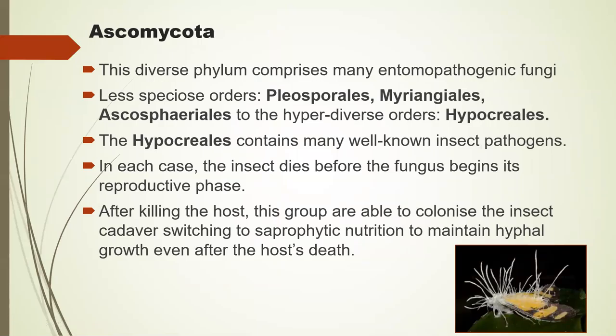Now we get to the Ascomycota — the really exciting ones, probably the Rolls Royce of the entomopathogenic fungi category. It's a diverse phylum comprising many entomopathogenic fungi. We have some less speciose orders like Pleosporales, Morangiales, and Ascosphaerales, and then the hyperdiverse Hypocreales, where most of you have heard of Cordyceps and Ophiocordyceps. These are the hemibiotrophs — the insect dies before the fungus begins to produce spores. After killing the host, they colonize the cadaver, switching to saprophytic nutrition, making a nice tight mummy while continuing to grow.